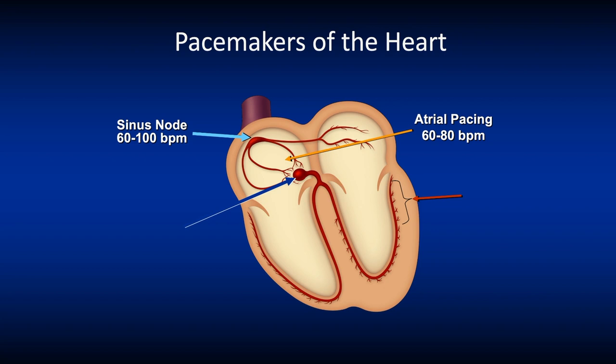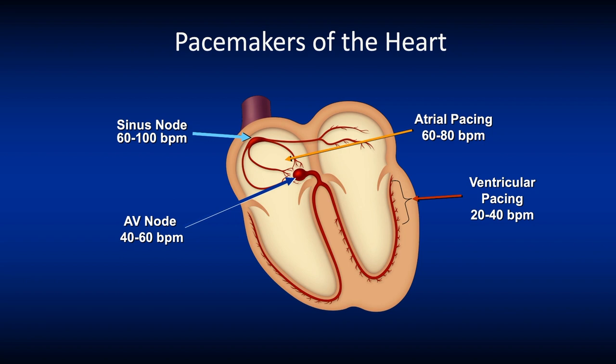If the SA node fails and atrial pacing fails, the AV node can take over pacing of the heart, pacing at a rate of 40 to 60 beats per minute. If all of the pacemakers — the SA node, atrial pacing, and AV node pacing — do not succeed, the ventricle can pace the heart at a rate of 20 to 40 beats per minute.